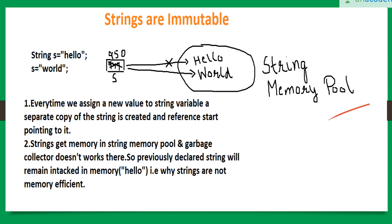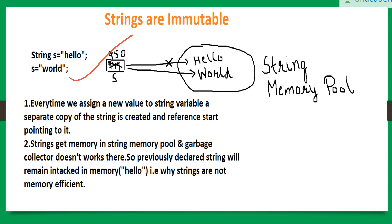This is not a good practice because garbage collection doesn't work in the string memory pool. So the unreferenced object will never get destroyed. As we've seen in the garbage collection lesson, JVM destroys unreferenced objects, but in the string memory pool JVM doesn't do that. That is why strings are not memory efficient, and that is why we have some alternative classes which we will see later.